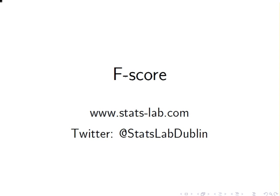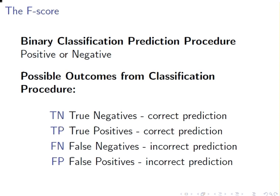In this presentation we're going to look at a metric used in predictive analytics called the F-score. Suppose we have a binary classification system that would predict outcomes as either positive or negative, true or false, yes or no, customer or not customer. I'm just going to call them positive or negative. So we have binary outcomes like that.